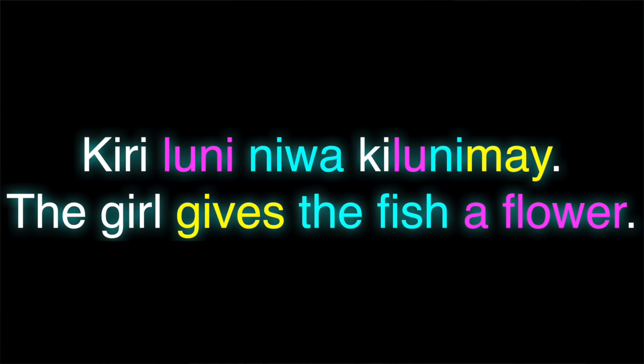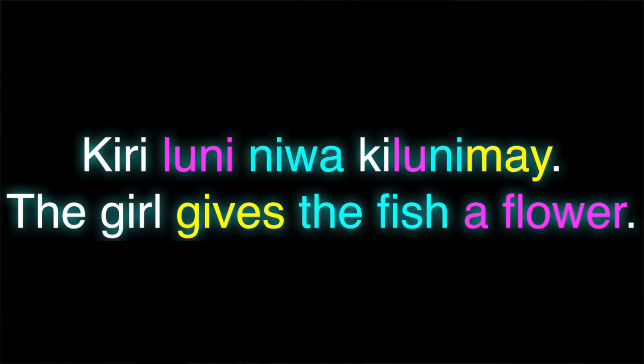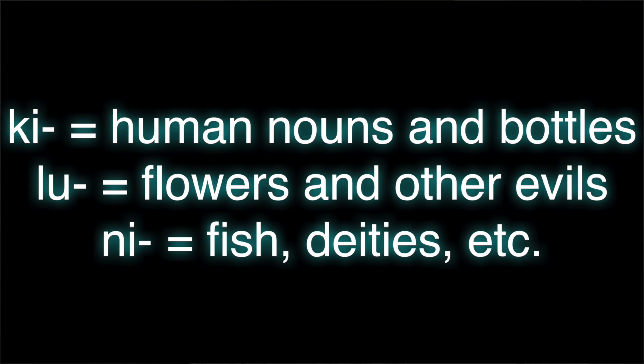Another approach, similar to how Swahili does it: 'kiri luni niwa kiluni mai.' Here there's a fixed order for the prefixes — subject, indirect object, direct object — plus an extensive gender system. In this example, the first syllable of each word is its gender prefix. Swahili has roughly 18 genders depending on how you count. So it's usually pretty easy to figure out who does what to whom. Swahili has no case marking whatsoever — all of this is marked directly on the verb, and since different genders appear in a given sentence, the prefixes are all distinct.